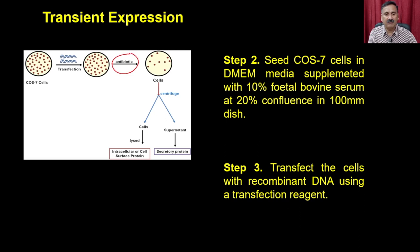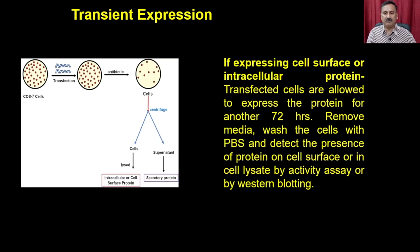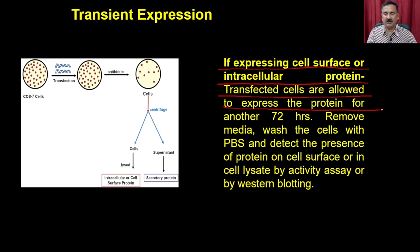In step two, you do the screening: you screen the cells with appropriate antibiotics. When you do so, most cells die except the transfected cells. For example, if you use puromycin or other antibiotics to kill non-transfected cells, you can select these cells with the help of antibiotics. Transfected cells are allowed to express the protein for another 72 hours. You then remove the media, wash the cells with PBS, and detect the presence of protein on the cell surface or in the cell lysate by an activity assay or by western blotting.